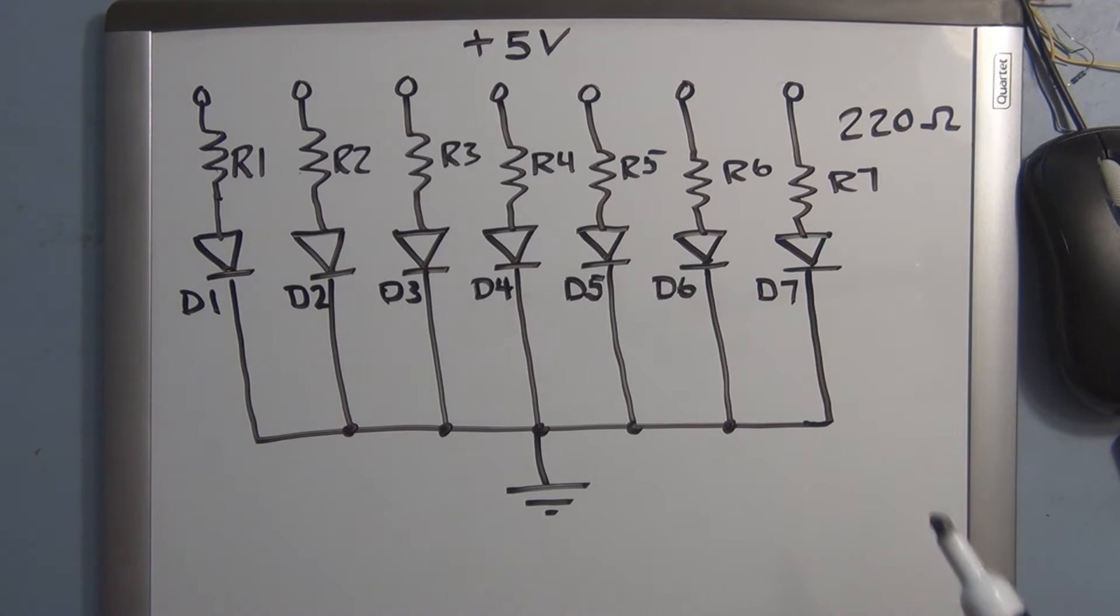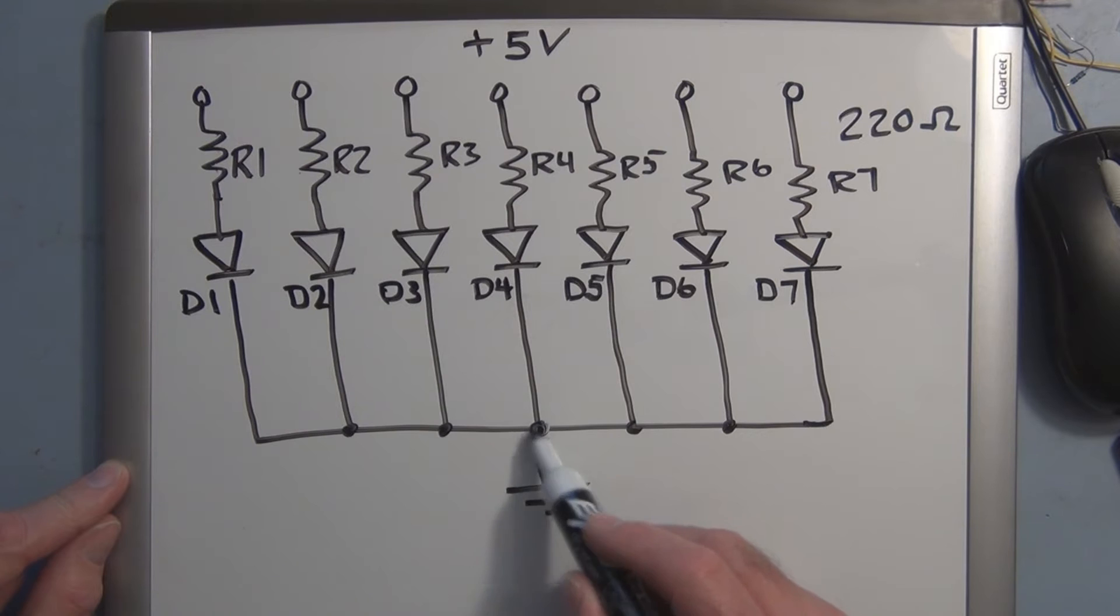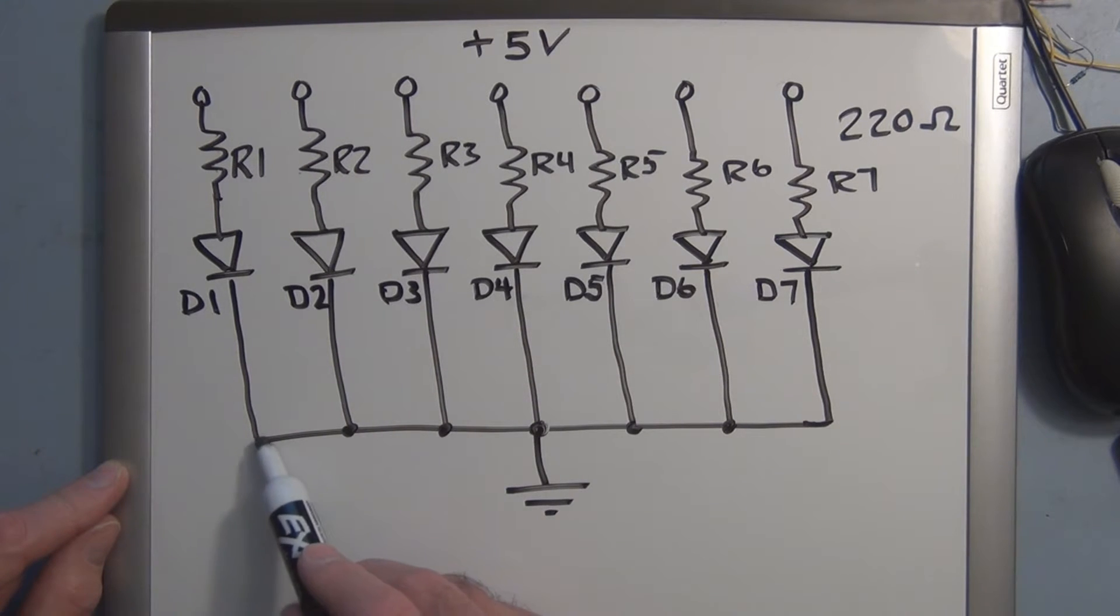But in this case, I'm just showing you individual discrete diodes signifying what you would find in the package, and that you have to be concerned with the current flowing just as you would with an individual diode. So with the seven segment display, you have common cathode and common anode.